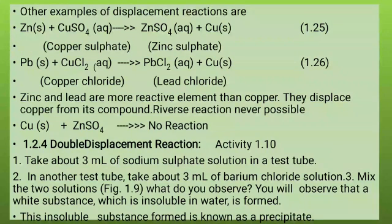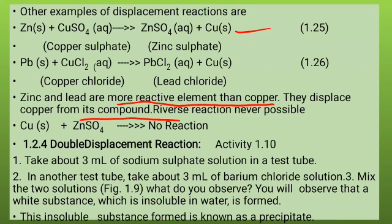Other examples of displacement reaction are: Zn + CuSO₄ → ZnSO₄ + Cu, and Pb + CuCl₂ → PbCl₂ + Cu. Zinc and lead are more reactive elements than copper, so they displace copper from its compounds.